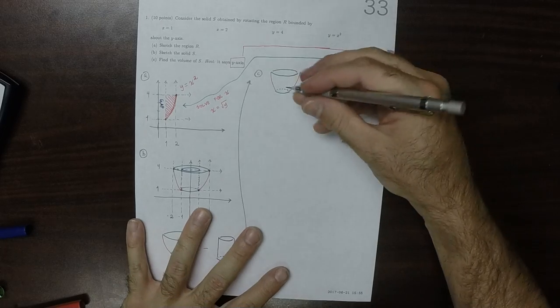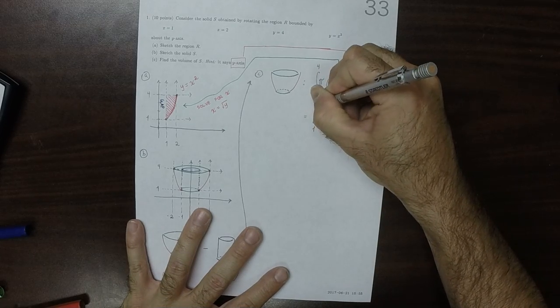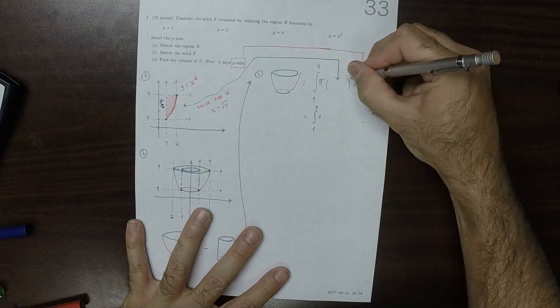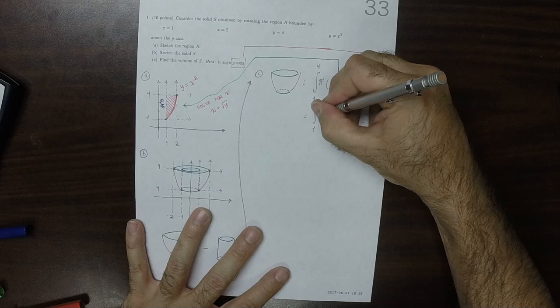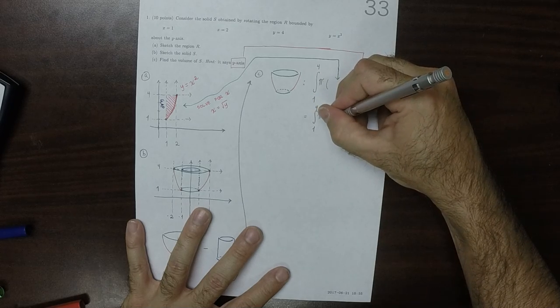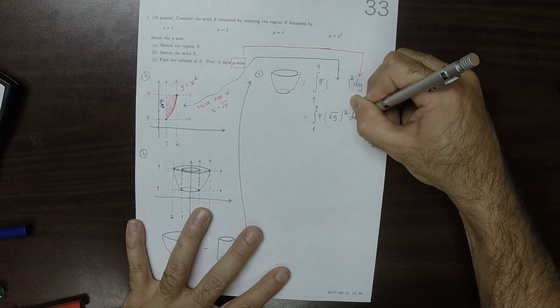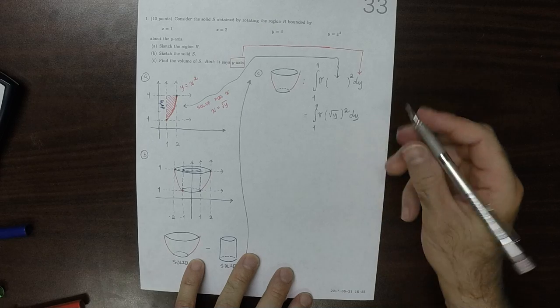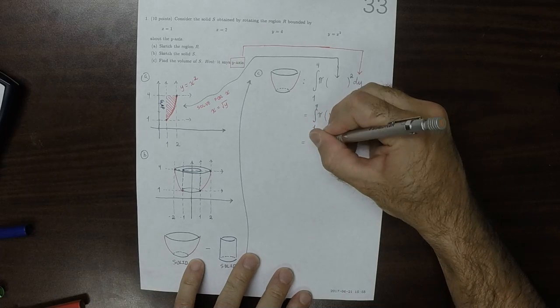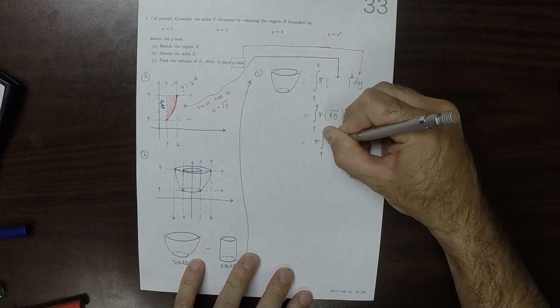So, it would be integral 1 to 4, that's got to be pi times radius squared, pi times square root Y squared DY. Well, square root Y squared that's just Y. So this would be pi integral 1 to 4 Y DY.